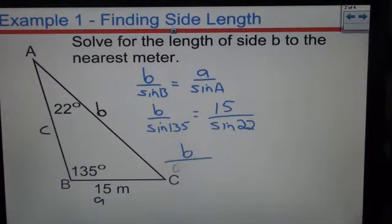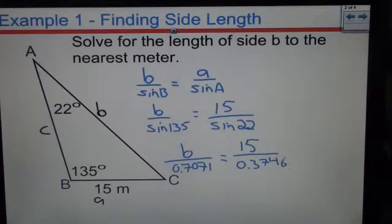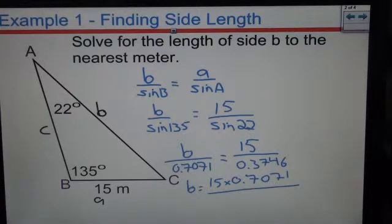I punch those in my calculator and it's 0.7071 equals 15 over 0.3746. I rearrange this equation and I get b equals 15 times 0.7071 all over 0.3746. I do that in my calculator and I end up with the answer b equals 28.3.